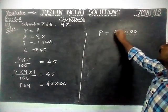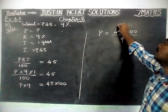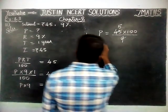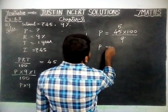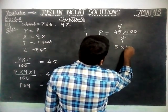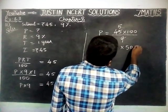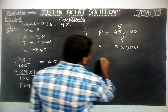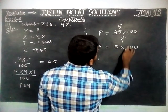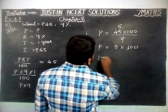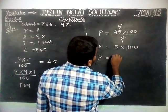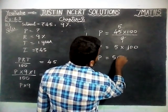1 nine is 9. 5 nines are 45. So P is equal to 5 into 100. P is equal to 5 into 100, which is equal to 500.